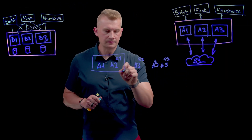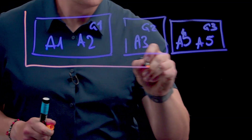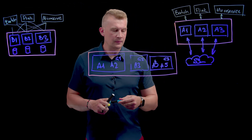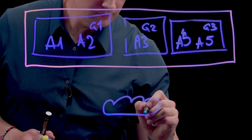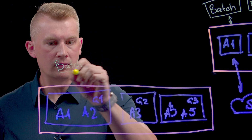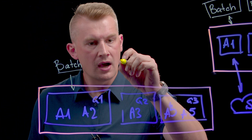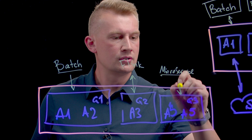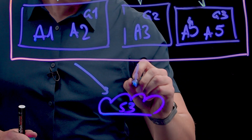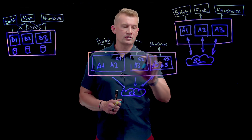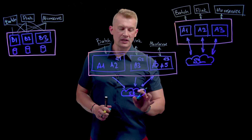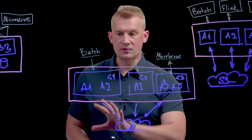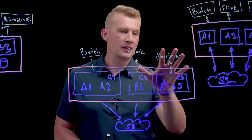Our WarpStream cluster will contain five agents, and these groups can also be deployed in different cloud environments while still talking to common S3 object storage. Our batch application will be assigned to Group 1, our Flink job will be assigned to Group 2, and our microservice communication will be assigned to Group 3. Those Agent Groups will have a consistent view of the same data with no resource sharing across agents. Data will be stored and replicated inside object storage, and your applications will not affect each other.